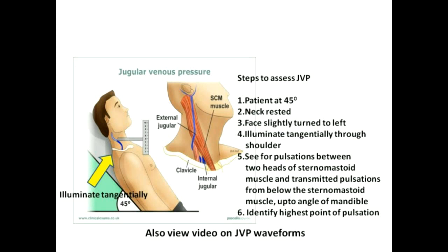Then you need to slightly turn the head to the left. Ideally the head is kept straight but it may be difficult to visualize going close to the patient, so you can gently turn to the left — but not too much, because turning the neck too far to the left will compress the sternomastoid and may actually obstruct the pulsations of the internal jugular vein. Always illuminate and look for pulsations — this is the principle in cardiovascular medicine. Pulsations are seen with tangential illumination as shown in the diagram.